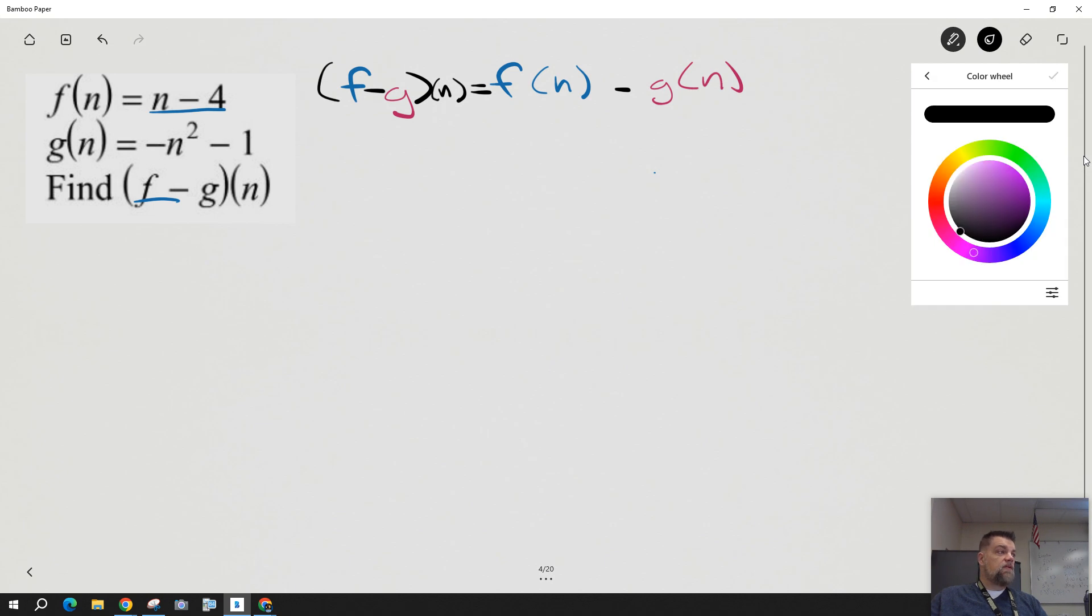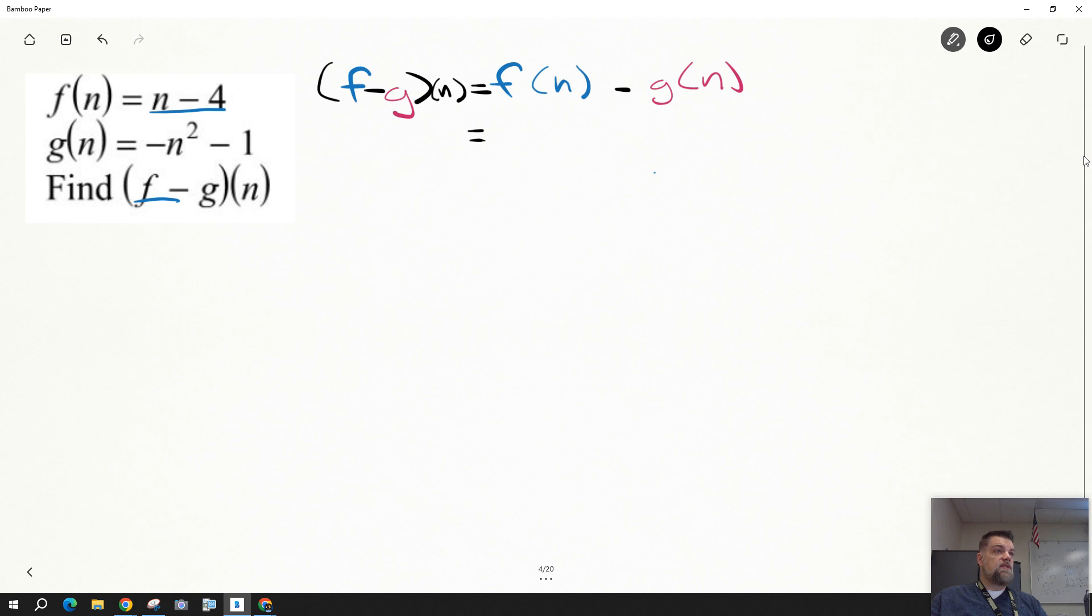Really, the only thing I'm going to do is I'm going to plug in f of n, which is n minus 4. Then in parentheses, I'm going to put minus g of n.